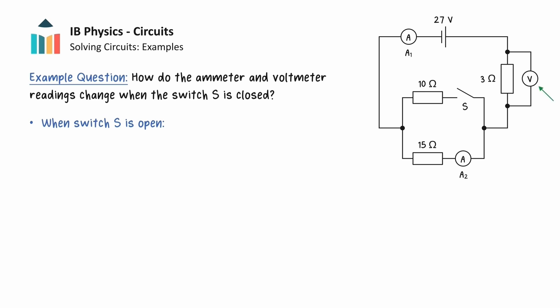Voltmeters are designed to have very high resistances so that they do not draw current through them, so we can assume that the 3 ohm resistor takes all of the current. Also, there will be no current in the branch containing the 10 ohm resistor, meaning that all of the current will go through the 15 ohm resistor.